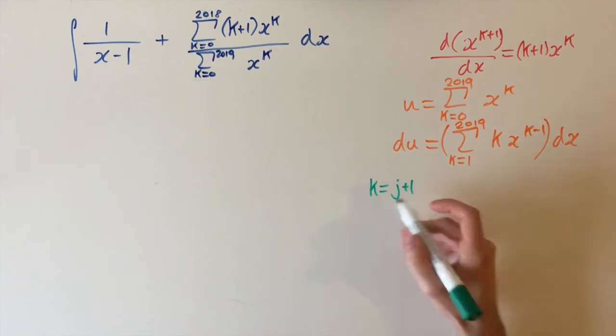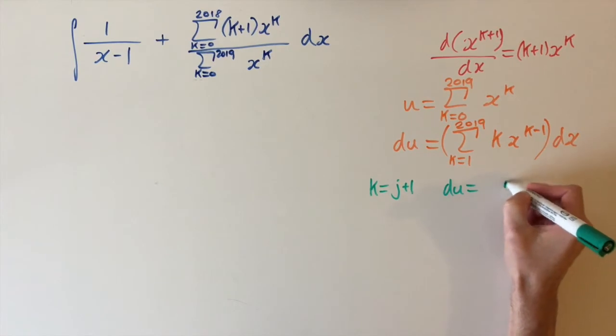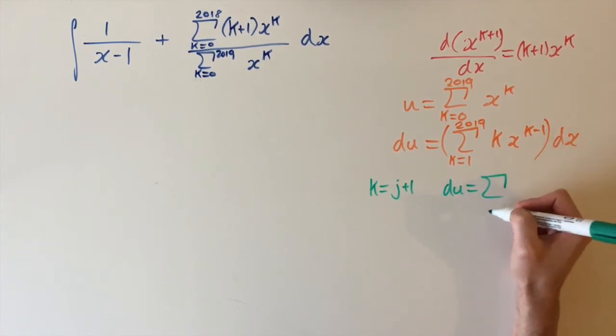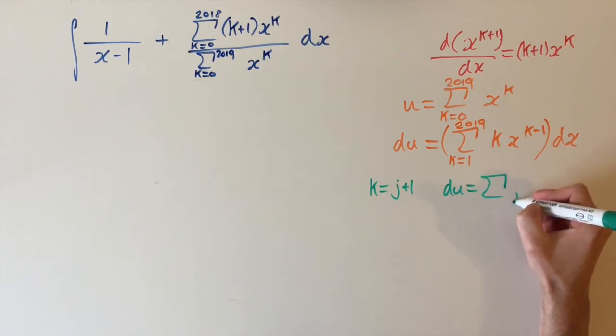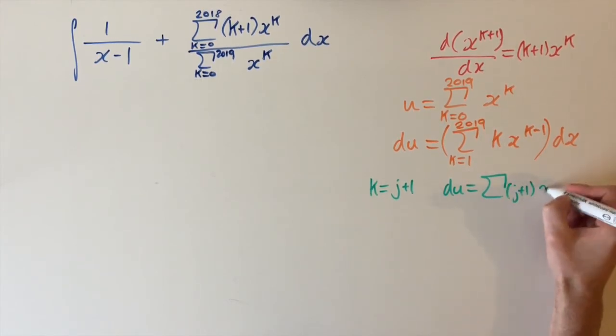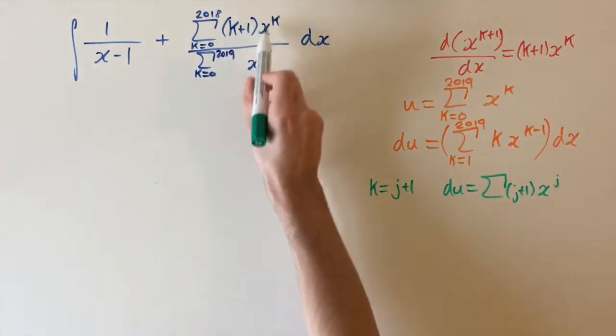We could just use k again. But I'm just trying to make it clearer. And then what happens? We have du equals the sum. And we'll look at the limits in a second. But then we replace k by j, j plus 1. So we have j plus 1 times x to the j plus 1 minus 1, which is just j. And now these terms are exactly in the form that we have up here.